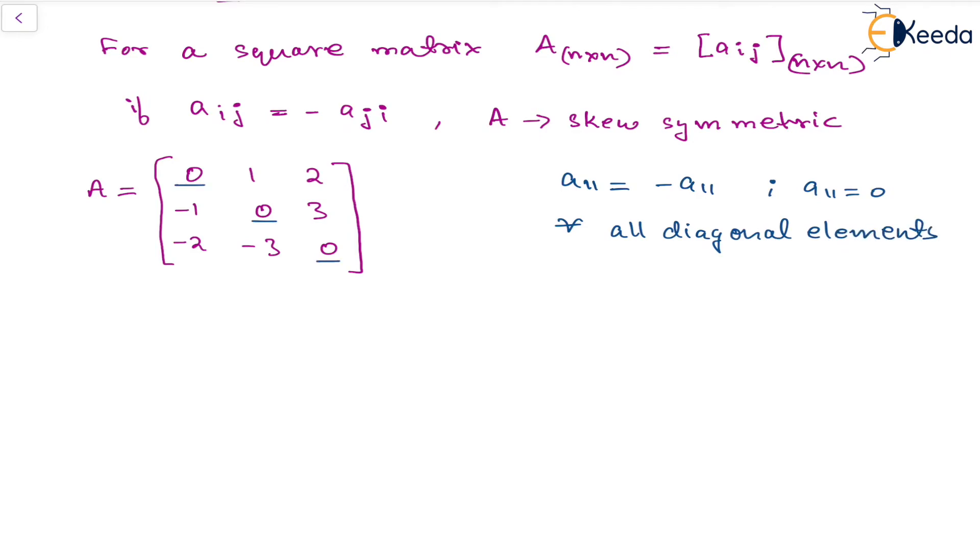Apart from that, if we see other elements, like this is A12 and this is A21, we can see that A12 is negative of A21. And similarly, talking about A13 and A31, we can see that A13 is negative of A31. Similarly, A23 and A32, so A23 is negative of A32.